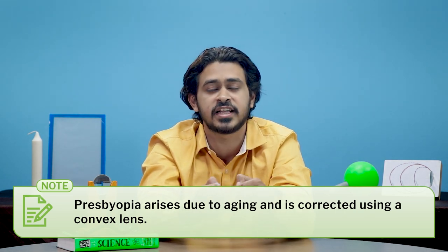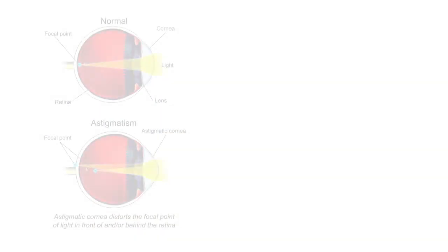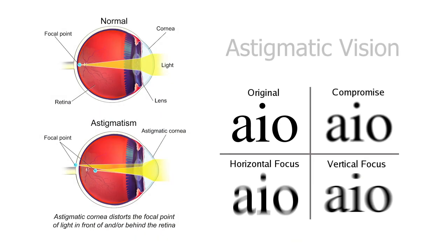The teacher showed how this defect can be corrected by using a convex lens in front of the eye model. The last defect studied was astigmatism, which arises due to irregularities in the lens of the human eye. A crumpled piece of plastic paper was kept in front of the eye model to show what kind of images are formed due to astigmatism. Such blurry images are due to defects along multiple axes, which are corrected using specialized lenses.